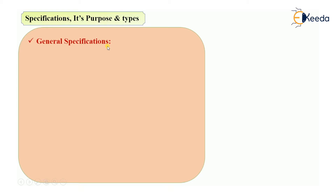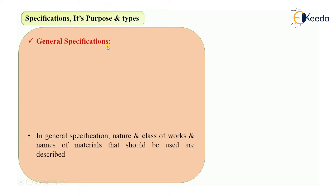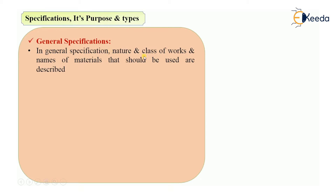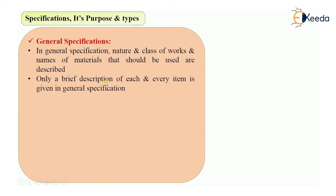Let's see general specifications first. In general specification, the nature and class of works, and the names of materials that should be used are described. Only a brief description of each and every item is given in this general specification — not a detailed one. As the name says, it is a general specification only, so it gives you a brief description of each and every item.